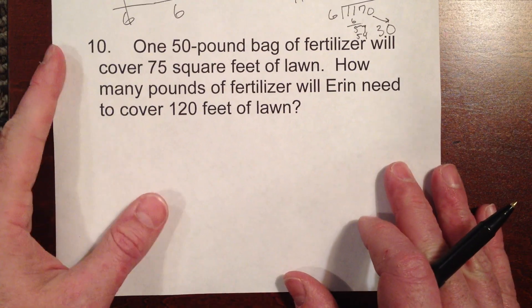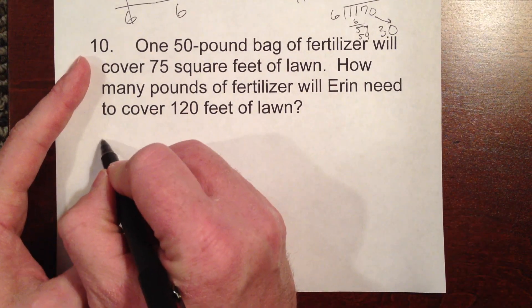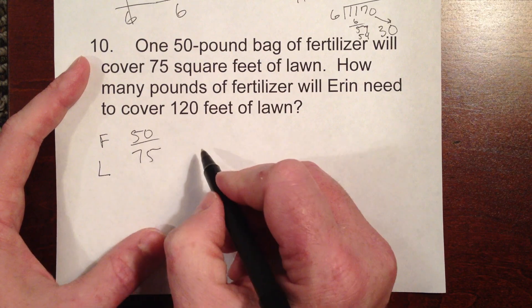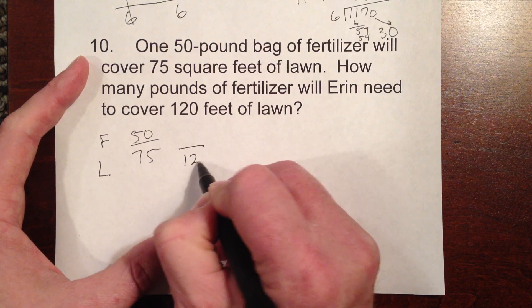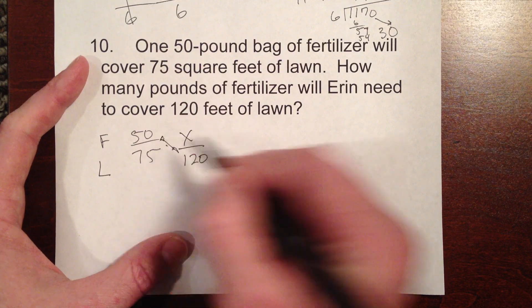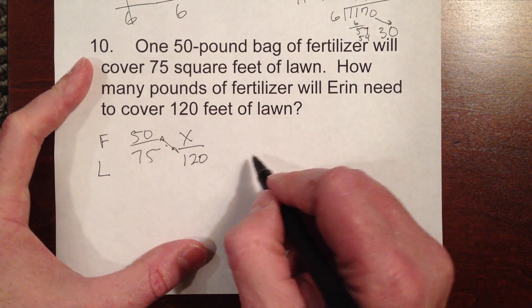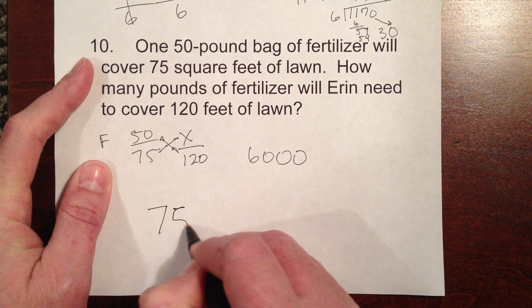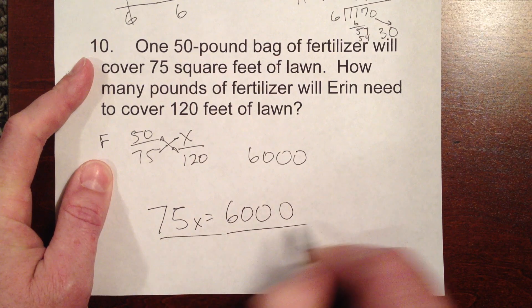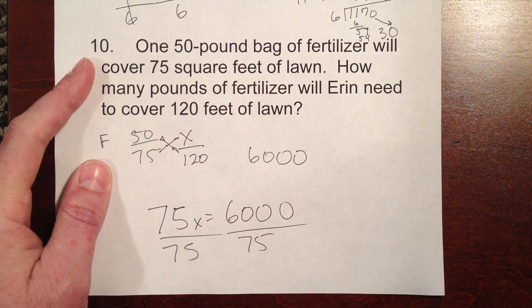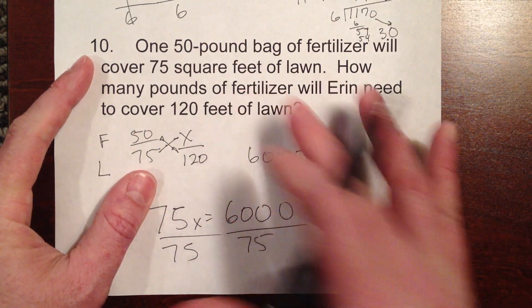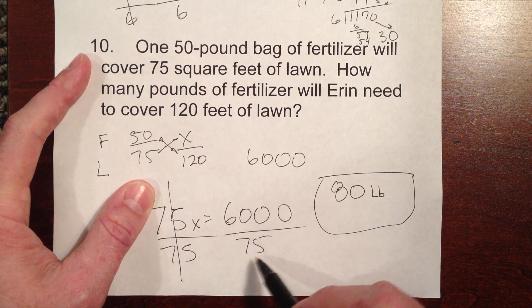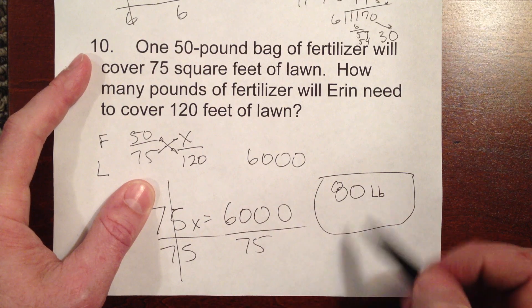Number 10 is exactly the same. We would set this up. We have fertilizer here and of how many square feet of lawn? We'd have 50 over 75. And then 120 feet here. Of course, we would cross multiply here. And we would get 6,000. Well, if that's the case, and this times this must be 6,000. 75X equals 6,000. And just take my word for it. If you divide those out, you will get X equals 80. So that means I need 80 pounds of fertilizer. Because 6,000 divided by 75 is 80. And again, you can work that out on your own.